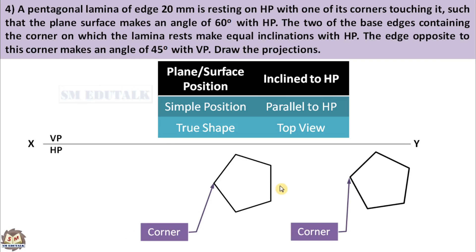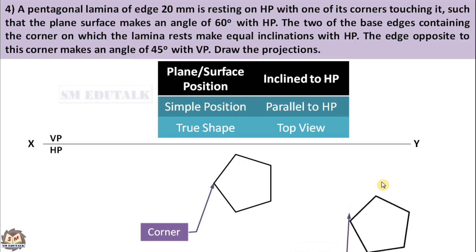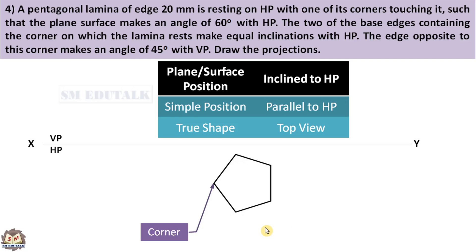Coming to the third pentagon: the right edge is perpendicular to the XY line, so we can consider this pentagon. For the last pentagon, no edge is parallel or perpendicular to the XY line, and no imaginary connecting line is perpendicular to it either, so it is eliminated. The third pentagon — with its right edge perpendicular to the XY line — is the one that satisfies the condition, and we select it to draw as the top view.